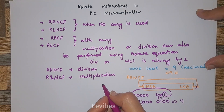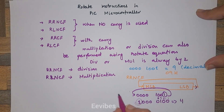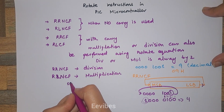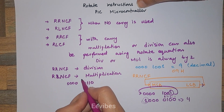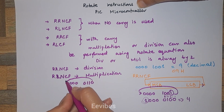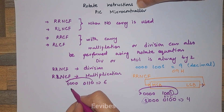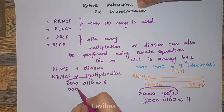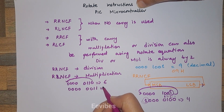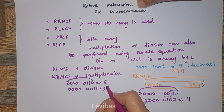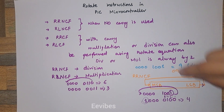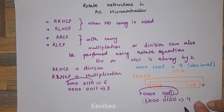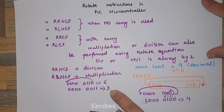We can take another example where the contents of the register are 0000 0110. When you perform the rotate right instruction, this LSB should go to the position of the MSB. Right now it's equal to 6, but when you do the rotation, it will become 0000 0011, whose decimal equivalent is equal to 3. When you divided 6 by 2, you got the result equal to 3. The PIC microcontroller deals with integers, so it neglects the fractional part — that's why 9 divided by 2 gives 4 rather than 4.5.